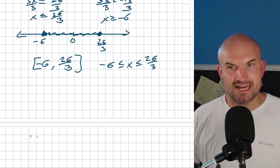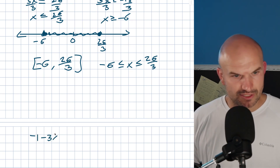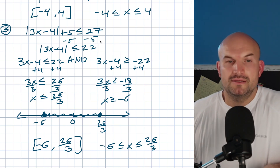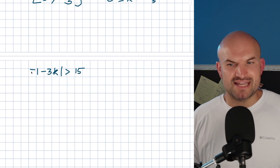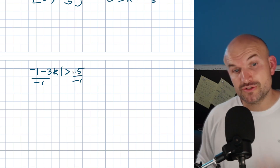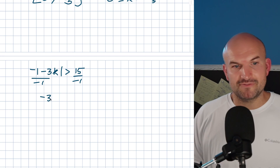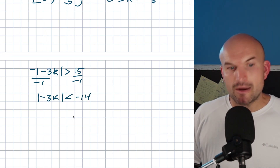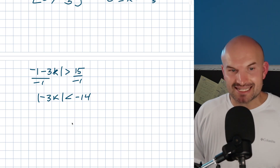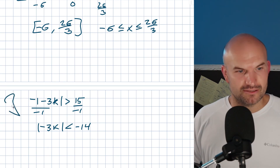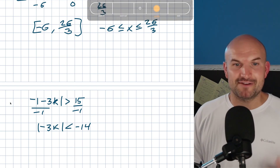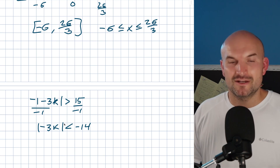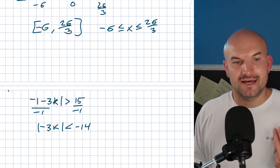Next example: negative absolute value of negative 3k is greater than 15. First isolate the absolute value — divide by negative one on both sides, which flips the inequality sign. So the absolute value of negative 3k is now less than negative 14. But an absolute value cannot be less than a negative number — distance can't be negative — so this results in no solution.